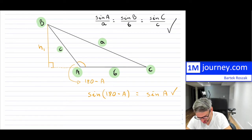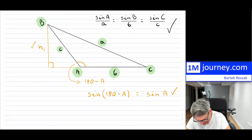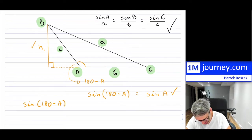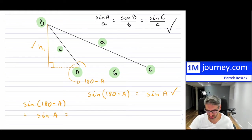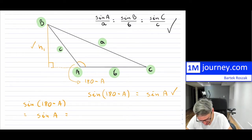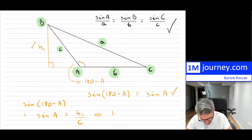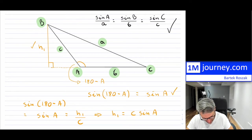Now let's figure out this height H1. Using sine of (180 minus A), which equals sine of A, and the ratio of opposite over hypotenuse, we get sine of A equals H1 over C. From here, we know that H1 is equal to C multiplied by sine of A. That's the first expression for H1.